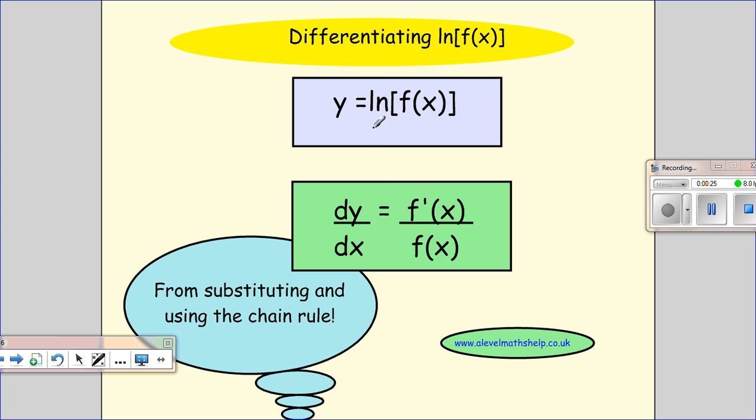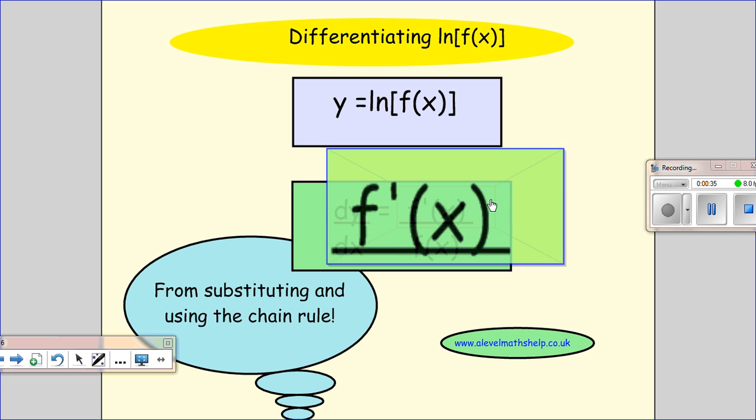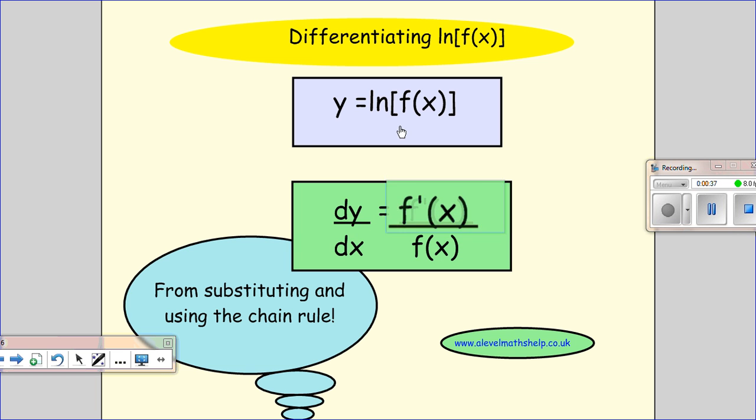If I have y equals ln of some function of x, like x squared plus 1 or something like that, when I differentiate, I get on the top of my fraction the differential of my function of x, and on the bottom I just put my function of x. This just comes from substituting u in there and then using the chain rule to put it all back together again.